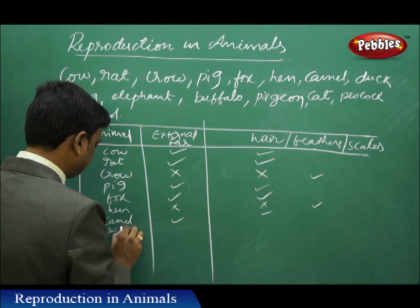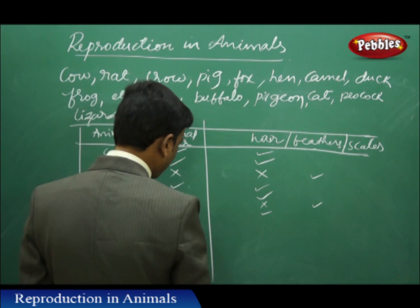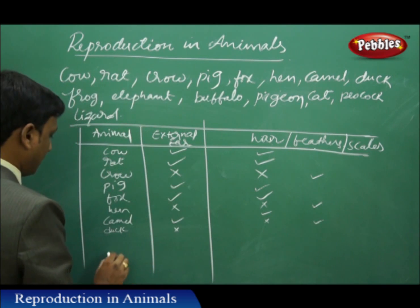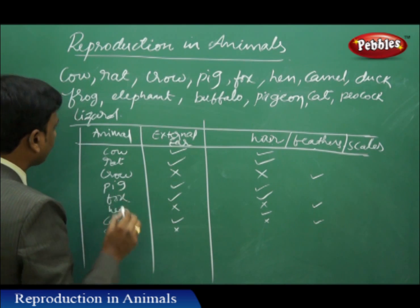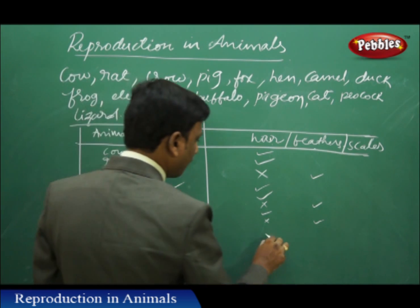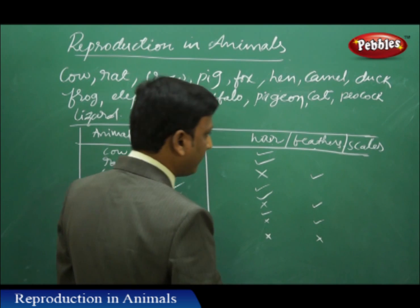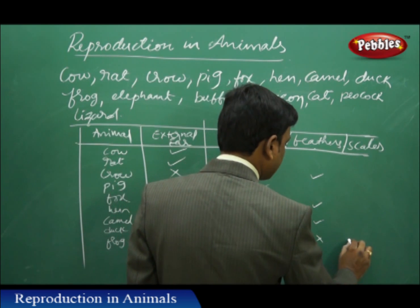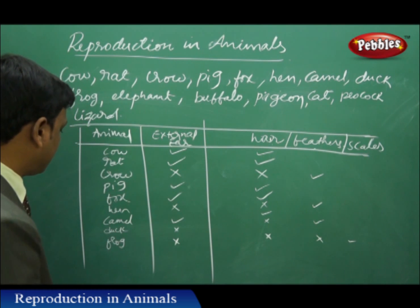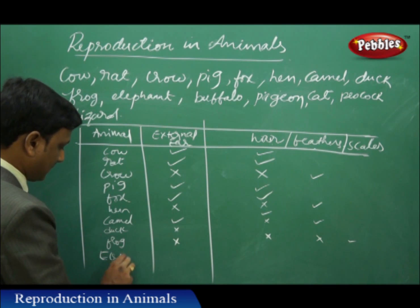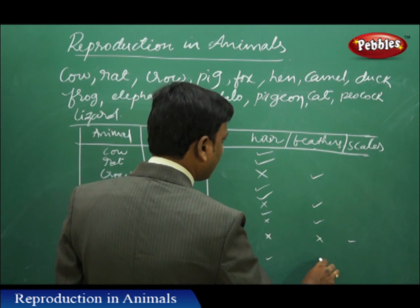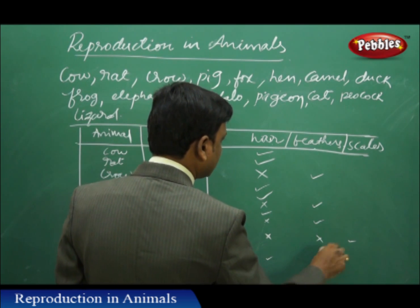And duck — it is having no external ear, no hair, but feathers. And frog — frog is having no external ear, no hair, no feathers, maybe having very little scales on their bodies. And elephant — elephant is having external ear, hairs, and no feathers and no scales.